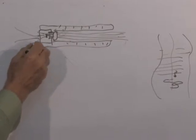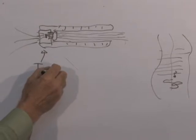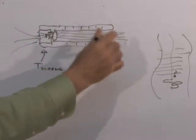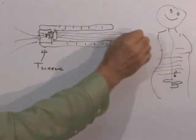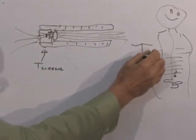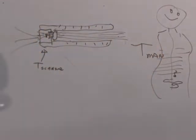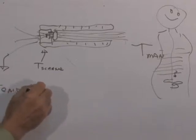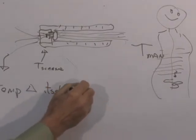The difference in temperature between the scanner and the sensor in the barrels and the target—this is the target, the temperature of the man—the difference in temperature between what it's looking at and its own temperature is what the infrared sensor gives us. So it's the temperature difference between itself and the target.